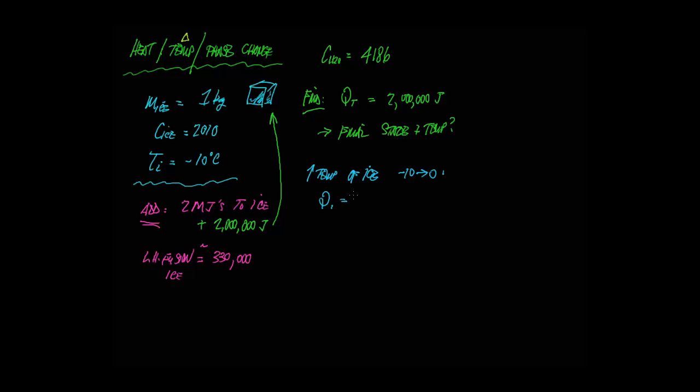Let's find out the Q to do that. We'll call that step 1. Since there is a change in temperature, we're going to use the MC delta T equation: 1 times 2010, and it changed by 10 degrees, that'll be 20,100 joules.